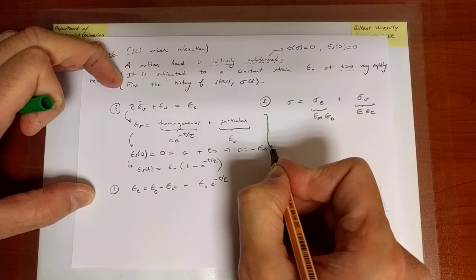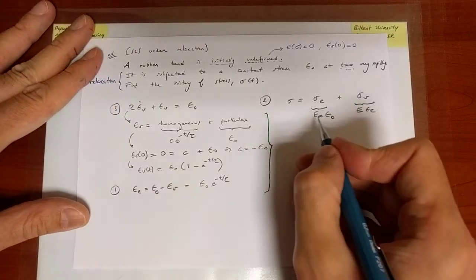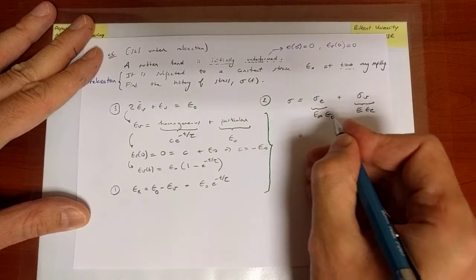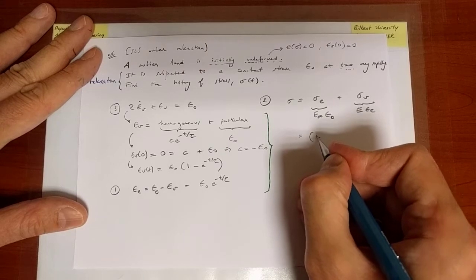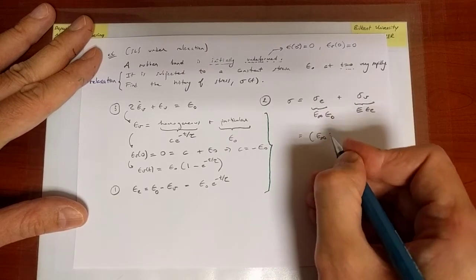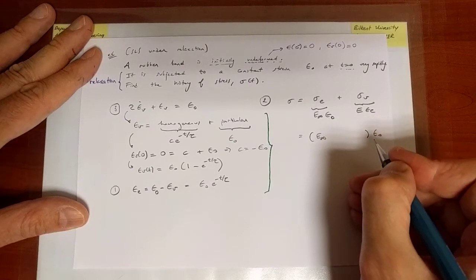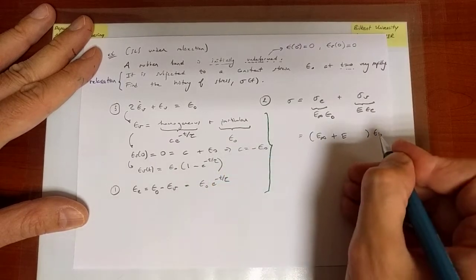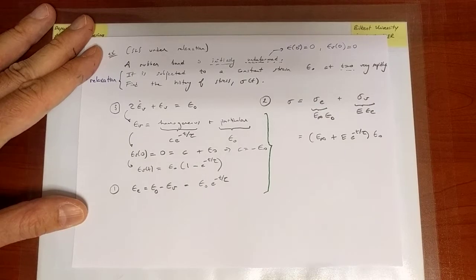So now that I have all of that, I can combine that piece of information to reach the ultimate goal of calculating the stress. Always keep the goal in mind - we're looking for the stress for a given strain variation. Therefore, the stress is equal to, if you plug in this value for the elastic strain and combine everything, you will find that sigma(t) = E_infinity*epsilon_0 + E*epsilon_0*e^(-t/tau).